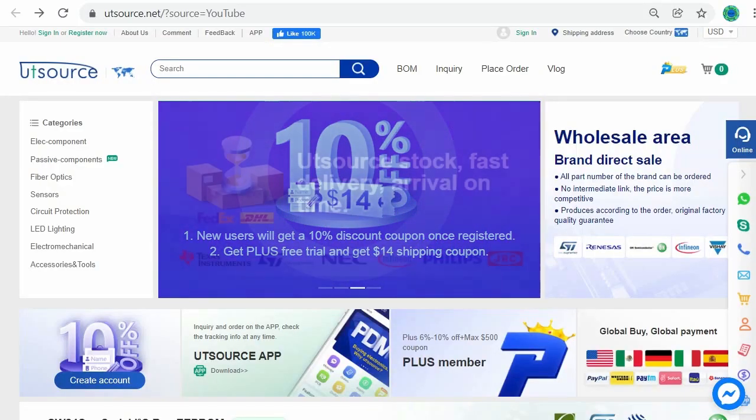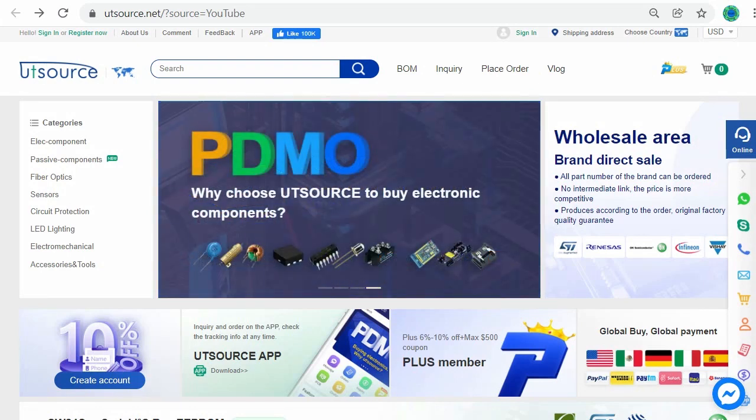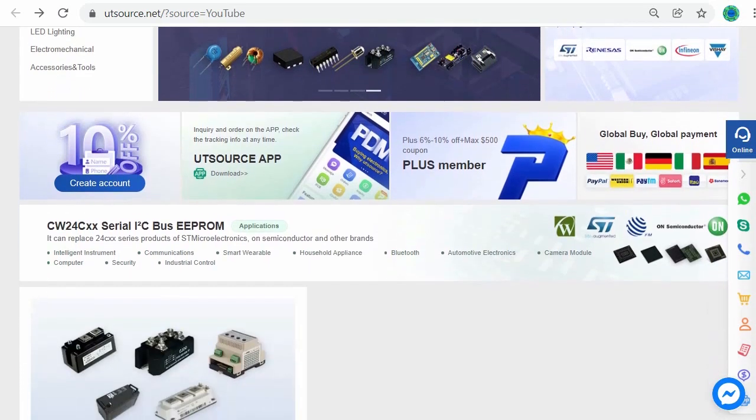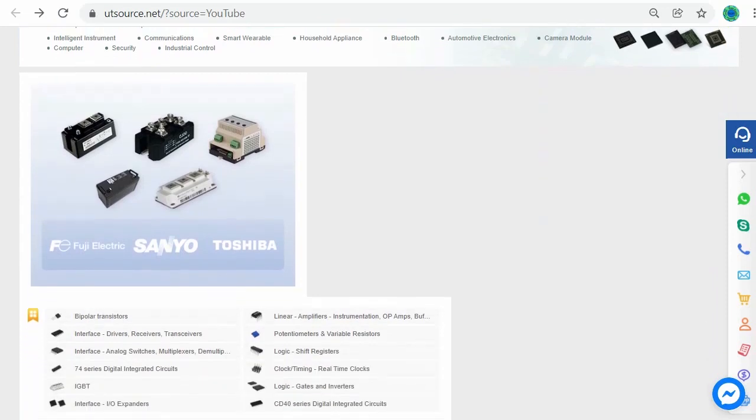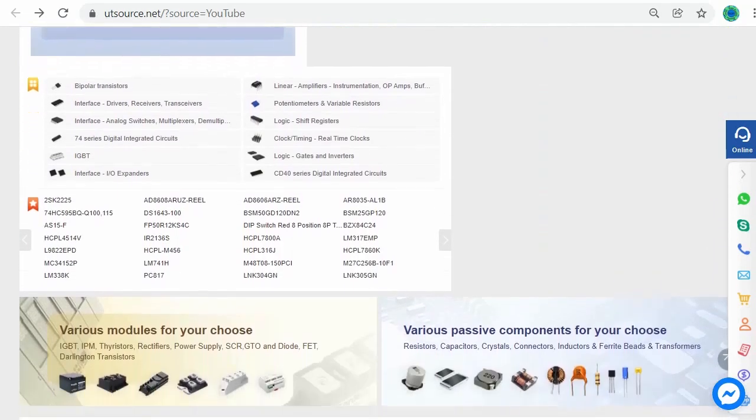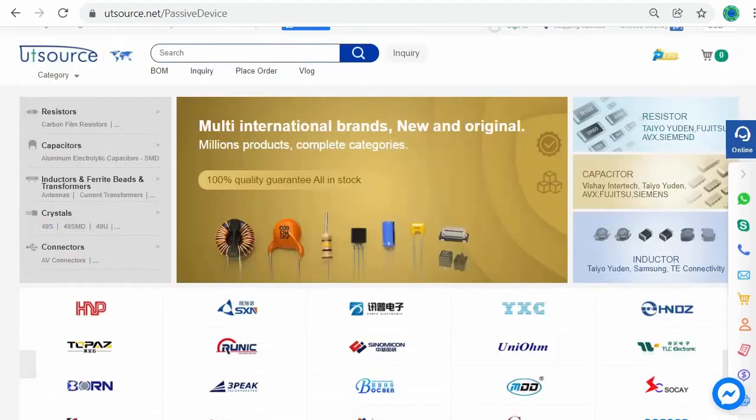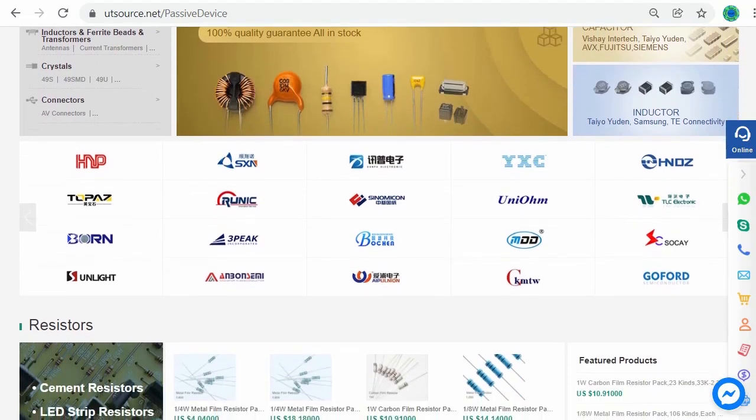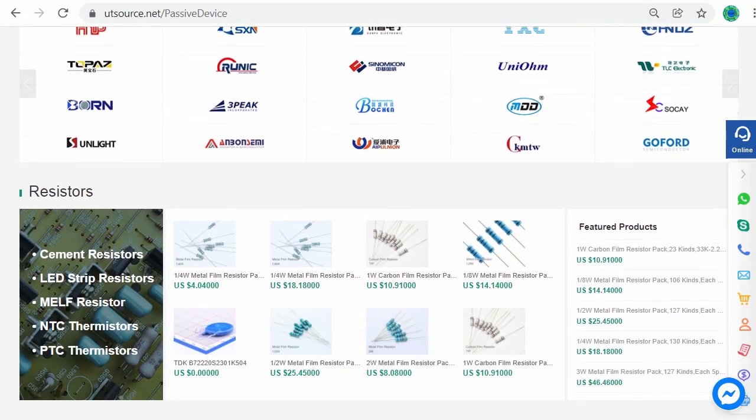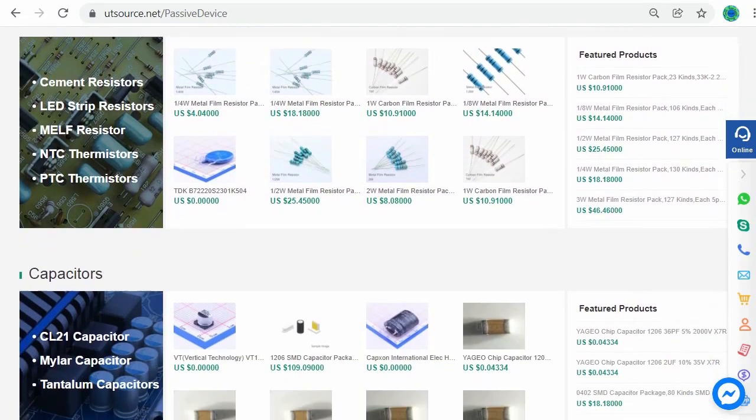UTSource.net is a professional purchasing website in the field of electronic components. UTSource.net provides different types of electronic components such as IC chips, capacitors, transistors, resistors, LEDs, diodes, sensors, and electrical and electronic tools.